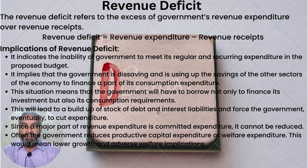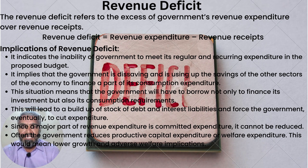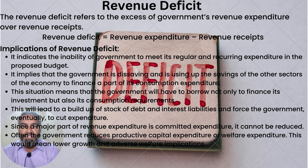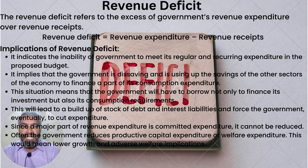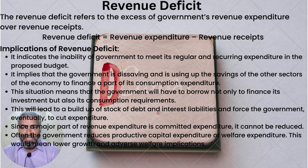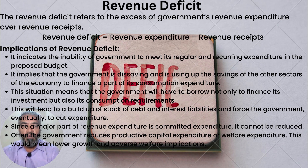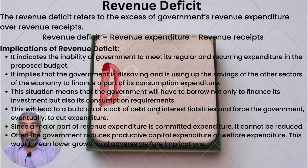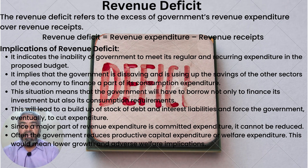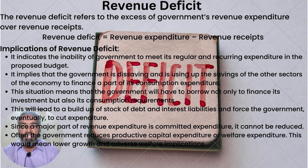It implies that the government is dissaving and is using up the savings of other sectors of the economy to finance a part of its consumption expenditure. This means that the government will have to borrow not only to finance its investment but also its consumption requirements.